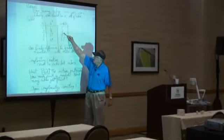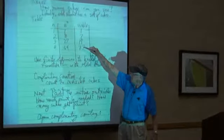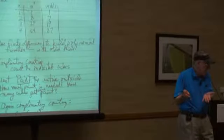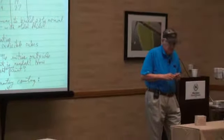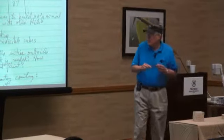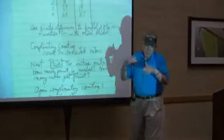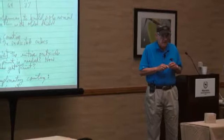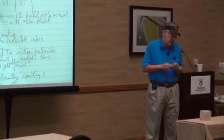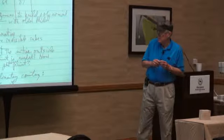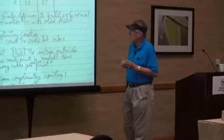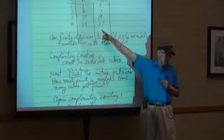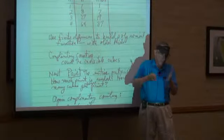Somebody will notice that this table has predictable differences. This difference is six, this difference is 12 and 18. Let's conjecture that these go up by multiples of six. For older students who have some idea about finite differences and polynomials — which will be the case next week when I work at MathZoom in California — I will, at this stage, ask them to find a polynomial that has these values using differences.